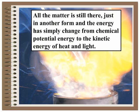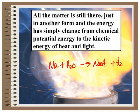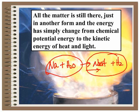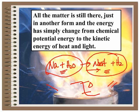All of the matter that was there beforehand — sodium and water — ends up in the sodium hydroxide and hydrogen. All of the mass of the sodium and water ends up in the products. We don't convert matter into energy; the energy released comes from the difference in energy between the reactants and the products. The products have less energy, so the difference — delta E, or change in energy — appears as heat and light. All of the mass is there; we've simply changed chemical energy into kinetic potential energy.